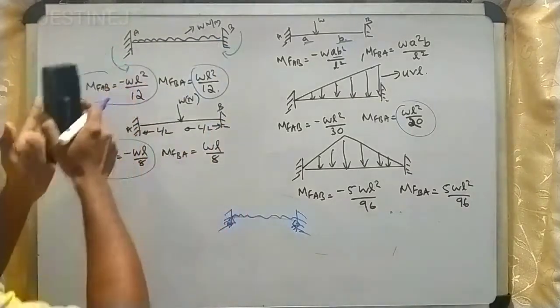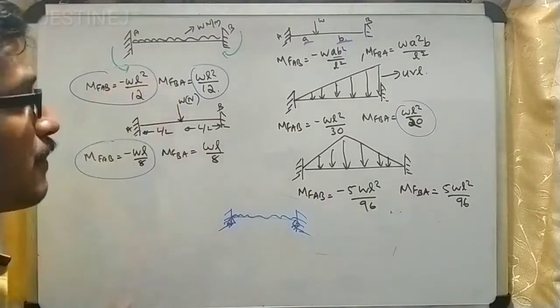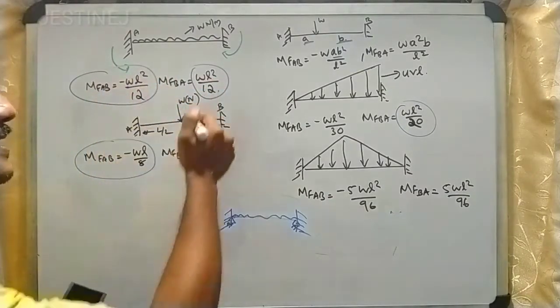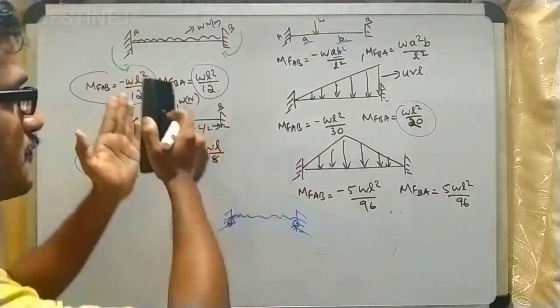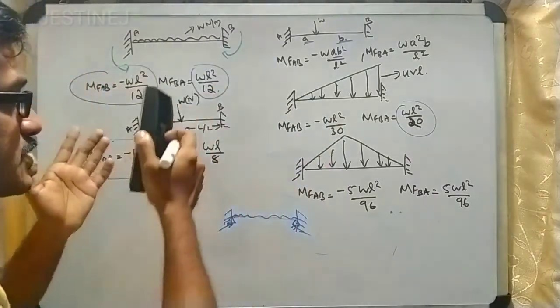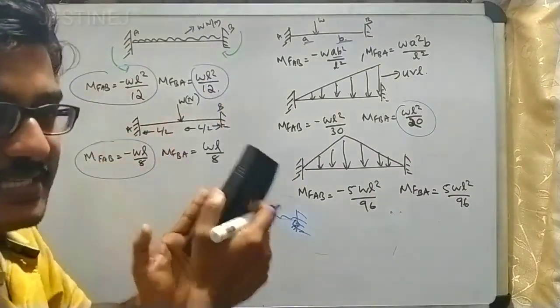Then the fixed end moment value is going to be, if it is anti-clockwise then it is minus WL square by 12, and if it is clockwise then it is WL square by 12. We are not going into the derivation part of how this formula happens. If you know this value just substitute by doing problems.